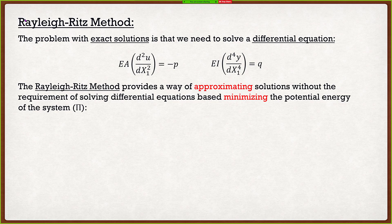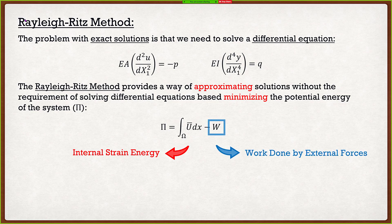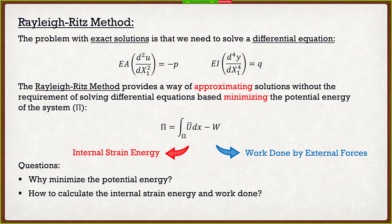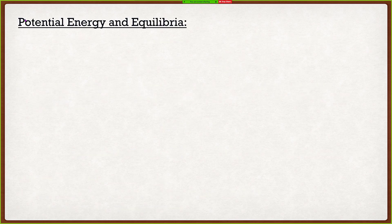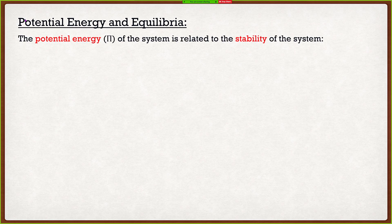So how do we minimize that potential energy? The question becomes: what is the potential energy? It's actually very simple. It's the total strain energy of the system — represented as the integral of U-bar — minus the work done on the system. So we have that internal strain energy and the work done by external forces. There are a lot of questions to answer: why minimize the potential energy, how do we calculate that internal strain energy and the work done, and how do we minimize this potential energy?